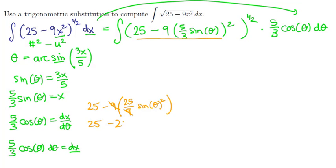The ninths cancel to get us 25 minus 25 times the sine of theta squared. Pulling the 25 out we have a 1 minus the sine of theta squared in parentheses and the Pythagorean theorem says that that's just cosine of theta squared so we'll make this replacement here.